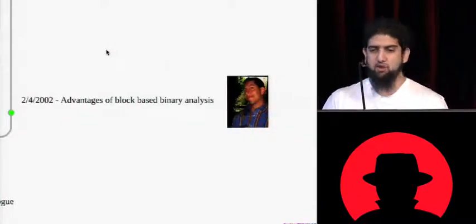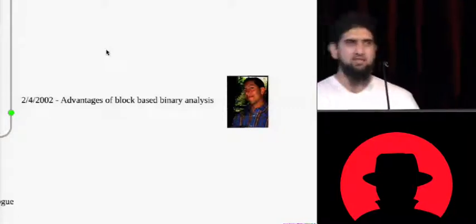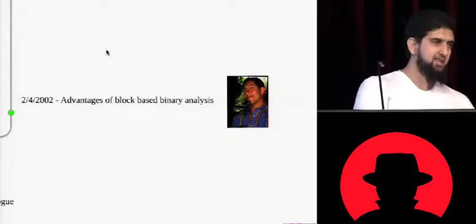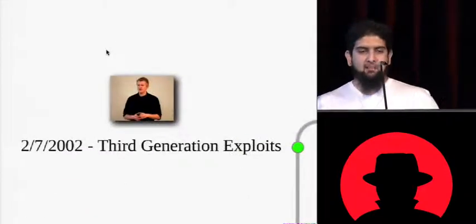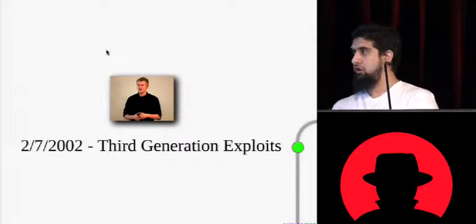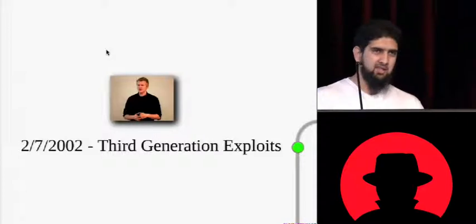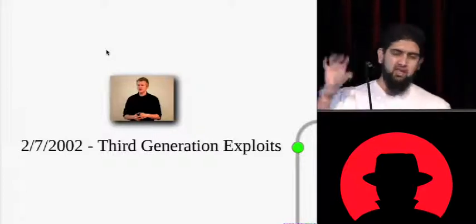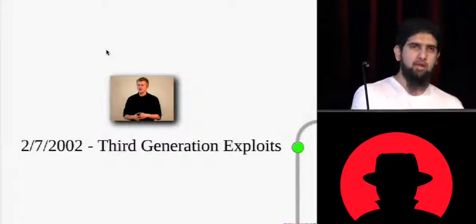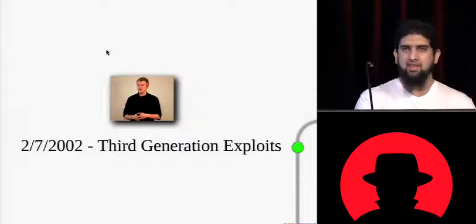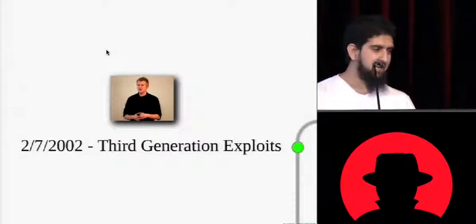In 2002, Dave Vytel publishes Spike, his block-based fuzzer, kind of revives interest in fuzzing and basically points out how many applications fall to fairly simple fuzzes. Helva Flake then does a talk called Third Generation Exploits. Helva's talk was interesting for a whole bunch of reasons. One thing is he showed Solr's 4-byte unlink exploit on the Windows platform, which wasn't done up until that point. He then documents a heap attack against Borland's heap allocator.